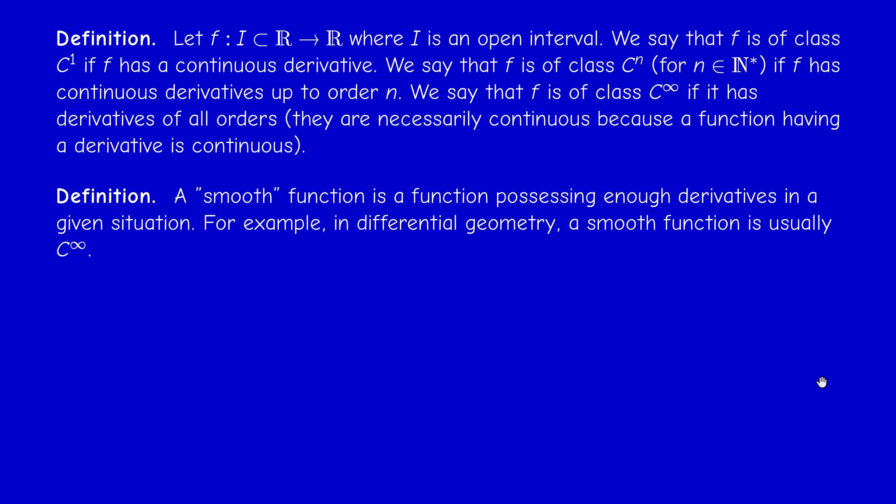We sometimes use the adjective 'smooth.' The concept of a smooth function is a little bit vague because it depends on the context, but usually it means that the function has enough derivatives to make the discussion make sense. For example, in differential geometry a smooth function is usually C-infinity, while in complex variables when we talk about smooth paths we mean paths of class C1.